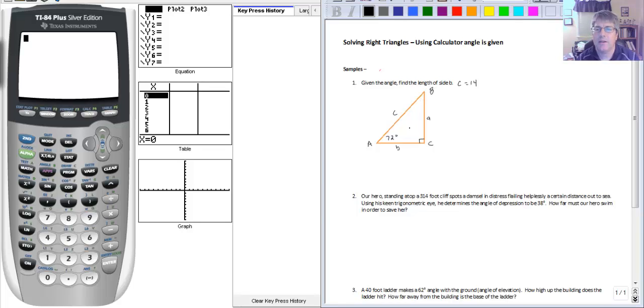It is common in trig for angles to be labeled with capital letters. So here I have a triangle with capital letter A, B, and C, and angle C is our right angle. We'll label the sides opposite those angles with the small letters. So the side opposite angle A is small letter a, the side opposite angle B is small letter b, the side opposite angle C is small letter c, or lowercase c.